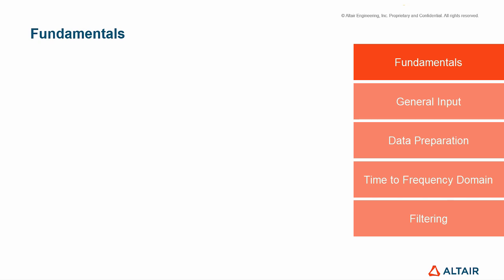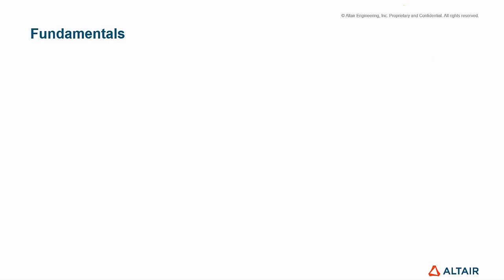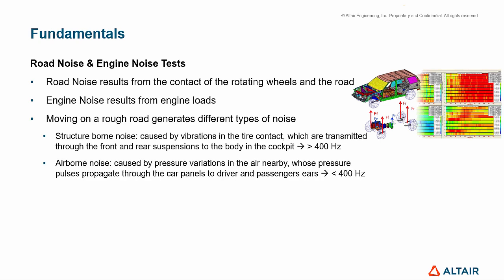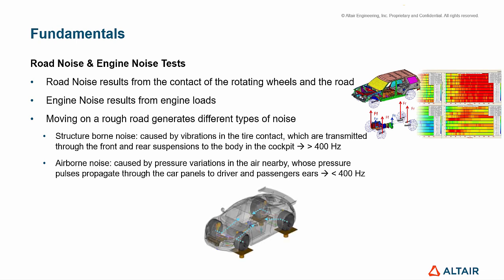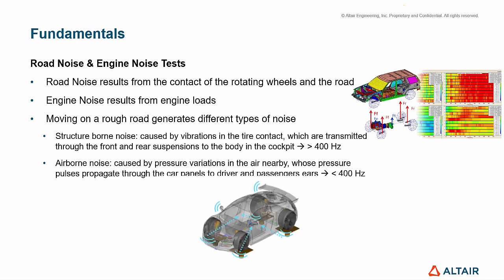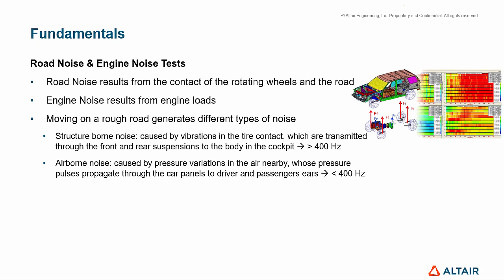The first topic is fundamentals of road noise and engine noise tests. Road noise results from the contact of the rotating wheels and the road, while engine noise results from engine loads. Moving on a rough road generates different types of noise: structure-borne noise caused by vibrations in the tire contact, transmitted through the front and rear suspensions to the body in the cockpit, predominant below approximately 400 Hz; and airborne noise caused by pressure variations in the nearby air, propagating through car panels to driver and passenger ears, predominant above approximately 400 Hz. The interior road noise is the sum of these two contributions.